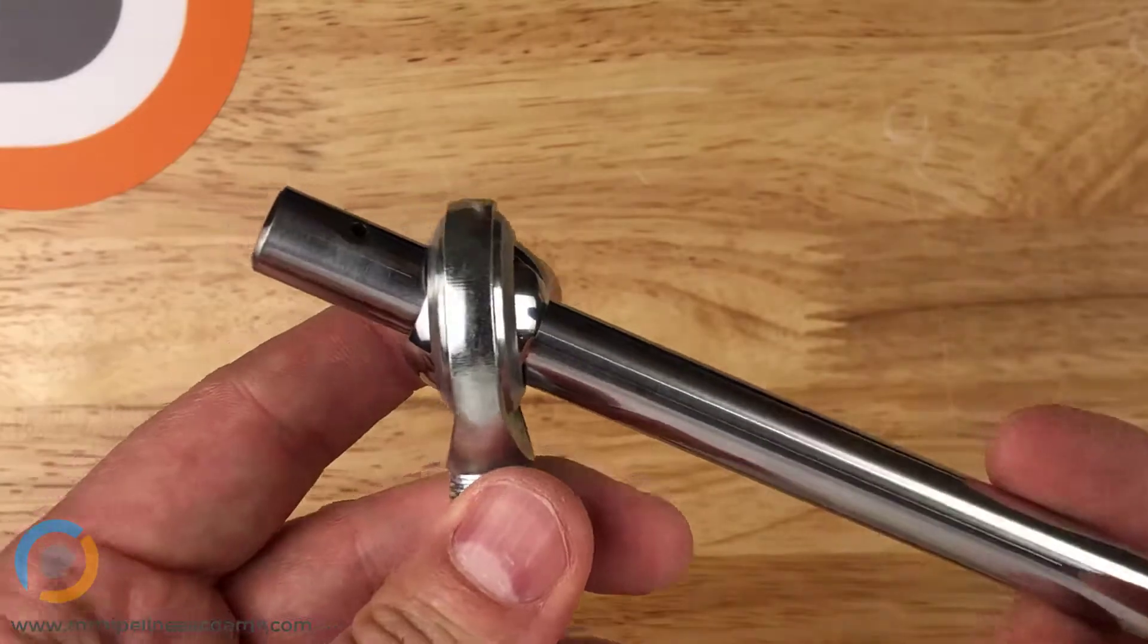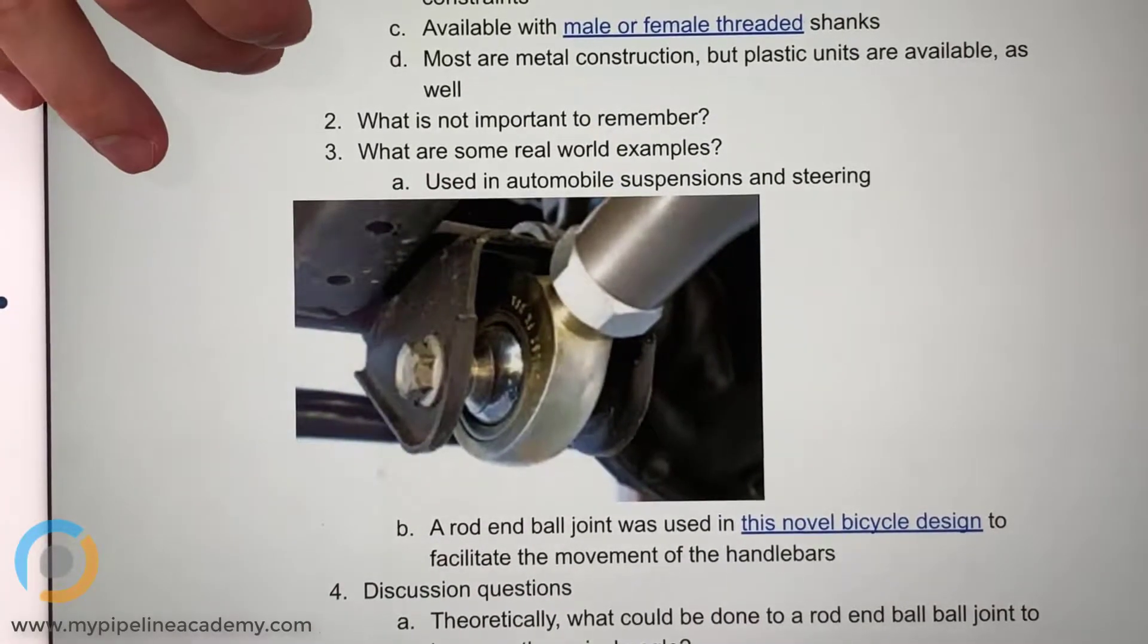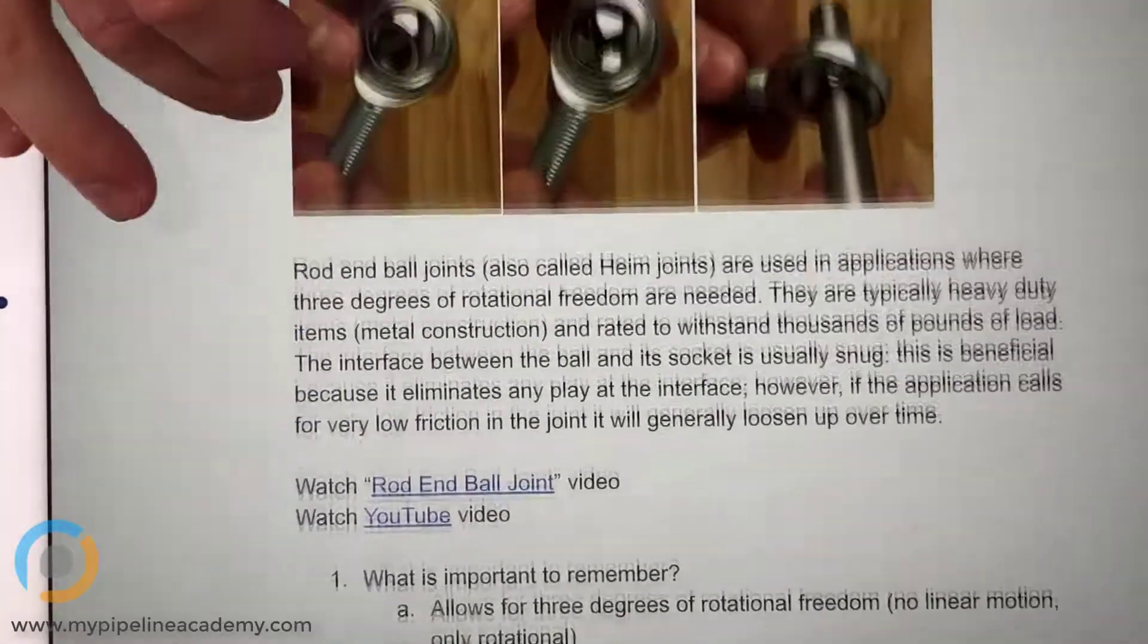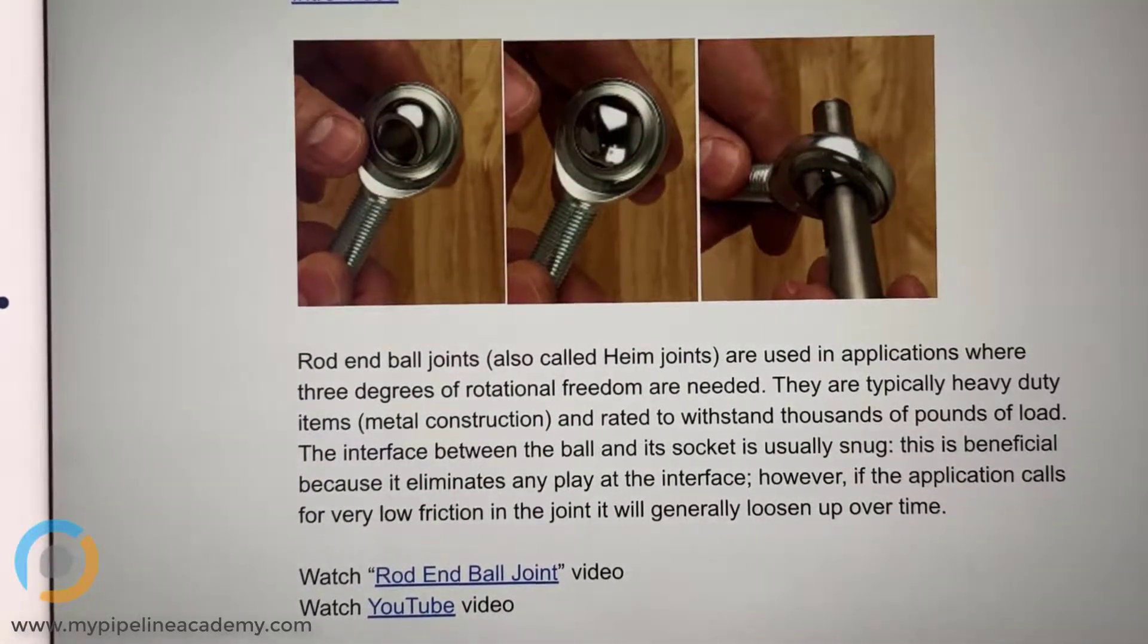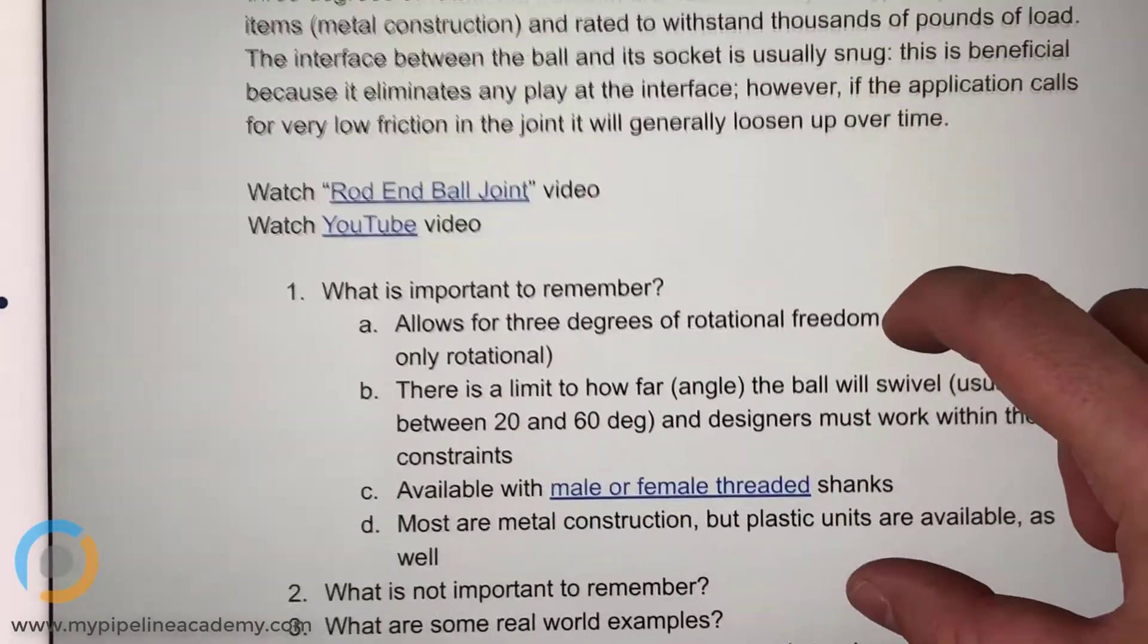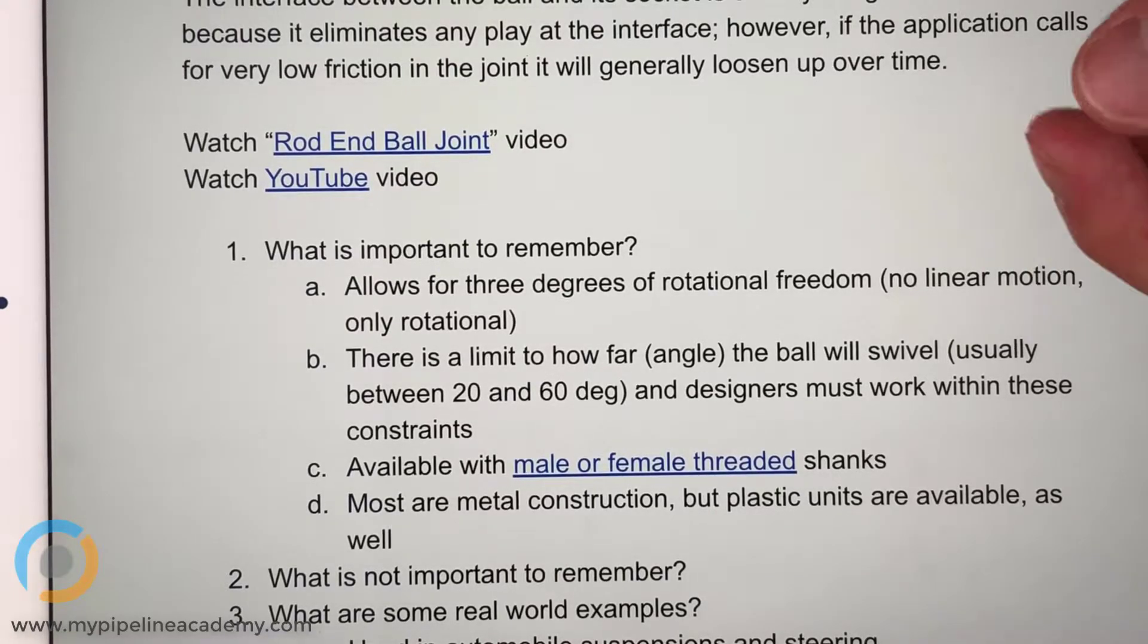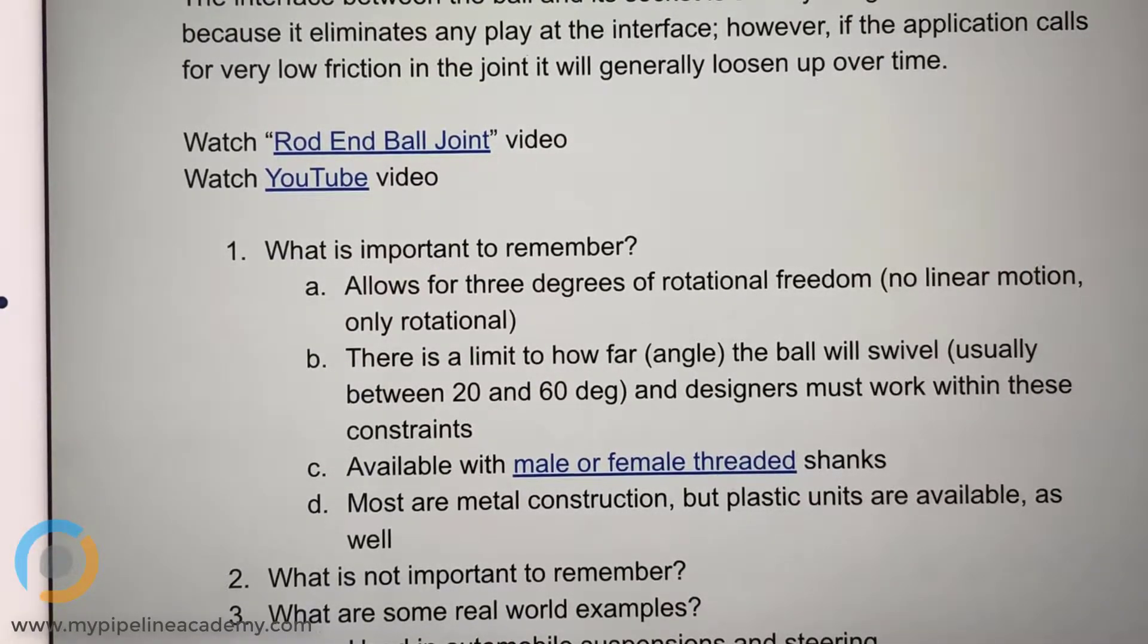I do have a question, could you access the lesson? Oh yeah. So the question was, if we scroll all the way up, what's important to remember, point number 1, and go to 1A. Okay. It says allows for 3 degrees of rotational freedom. So you said 3 degrees here, but it shows that we have approximately 65 there. Oh, I see, I see the confusion.